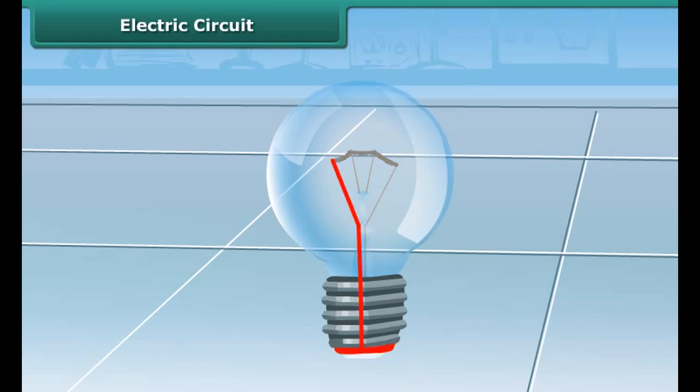One of these thick wires is connected to the metal case around the base of the bulb. The other wire is connected to the metal tip at the base of the bulb. The metal case and metal tip at the base are two terminals of the bulb.